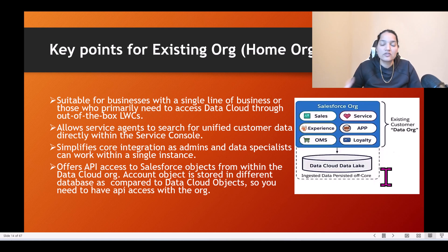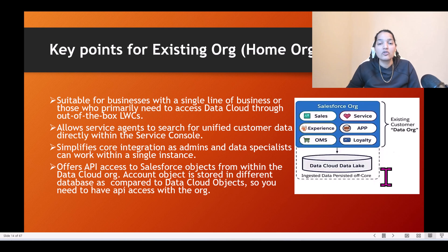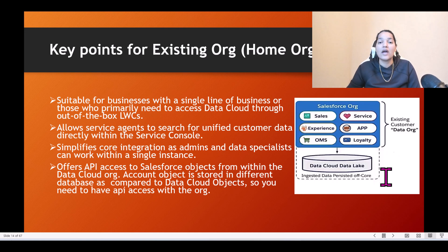The URL will be completely different once you log into the data cloud-enabled org. So to summarize: there are two ways of provisioning — creating a separate standalone org, or enabling data cloud within your same org. Which option you choose depends on your business needs. More complex businesses keep things separate in a standalone org; simple single-line-of-business companies enable it within the same org. But even in the same org, account objects reside in a completely separate database from data cloud objects, and you need API access.